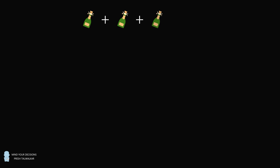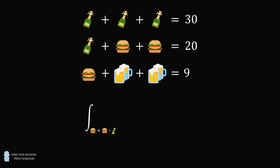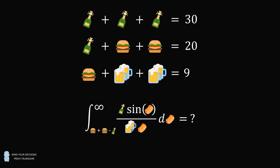Hey, this is Presh Talwalkar. Here's a puzzle that's gone viral in the mathematical community. Bottle plus bottle plus bottle is equal to 30. Bottle plus burger plus burger is equal to 20. Burger plus 2 beers plus 2 beers is equal to 9. What is the value of the integral from burger plus burger minus bottle to infinity of the fraction bottle multiplied by sine of hotdog divided by the quantity 2 beers multiplied by hotdog, dhotdog? I thank Phil for the suggestion. Pause the video if you'd like to give this problem a try, and when you're ready, keep watching to learn how to solve this problem.